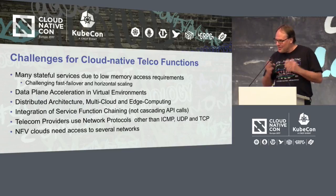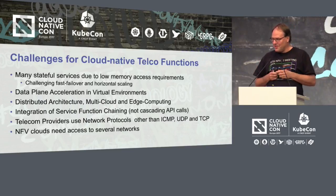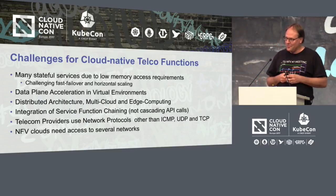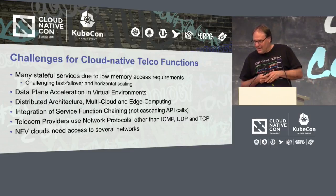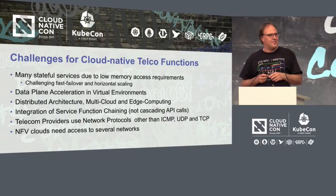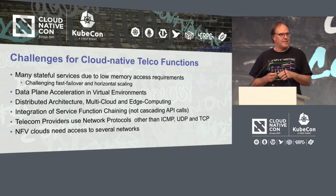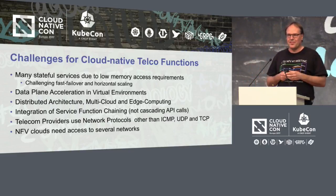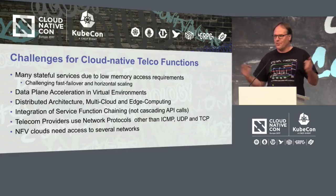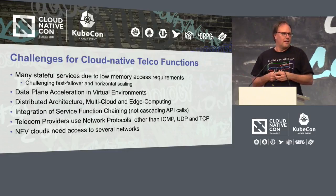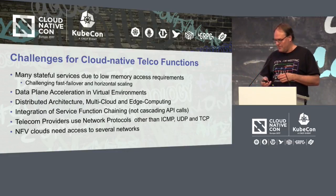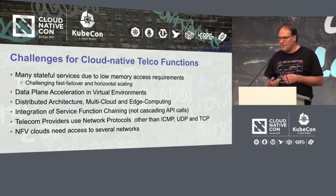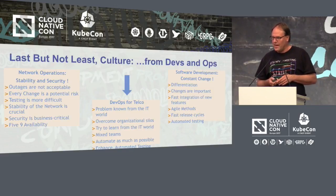Telecom providers use a bit of different network protocols these days — we can discuss whether that's a wise decision or not — but there are many other ones, not only UDP, TCP, and ICMP. And basically, an NFV cloud typically needs access to different networks, because we typically run different networks due to security, multi-tenancy reasons, and so on. So that's sort of the challenges we have.